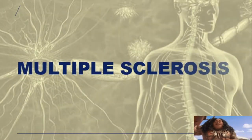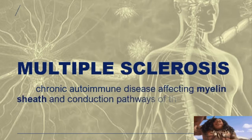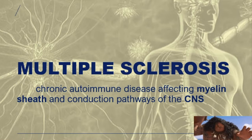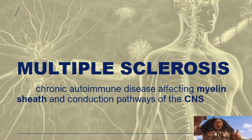Multiple sclerosis is a chronic autoimmune disease affecting the myelin sheath and the conduction pathways of the CNS. It is chronic, progressive, non-contagious, and a degenerative disease of the CNS. It also has autoimmune implications, making it similar to GBS. However, the area affected is different: in multiple sclerosis it is the CNS, whereas in GBS it is the PNS.